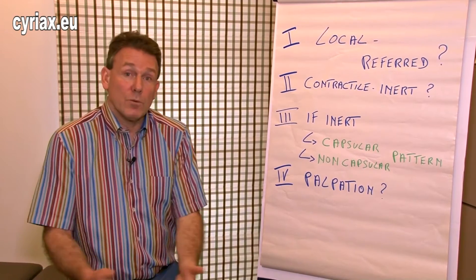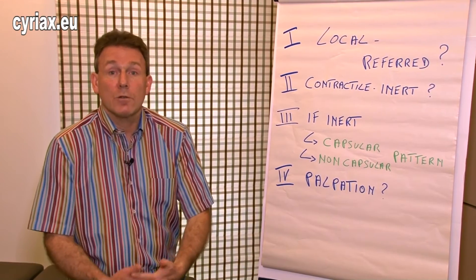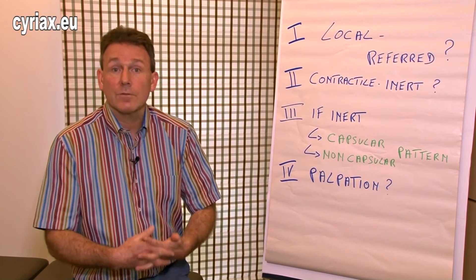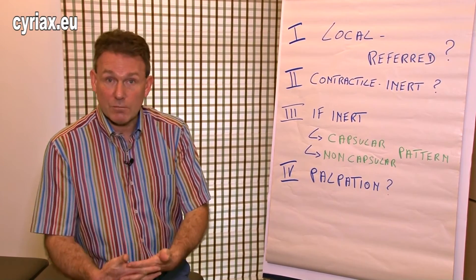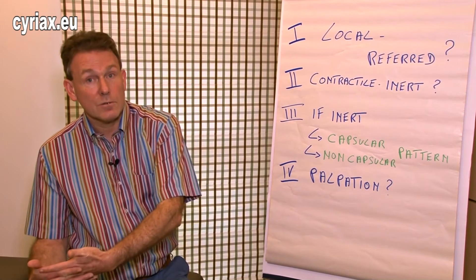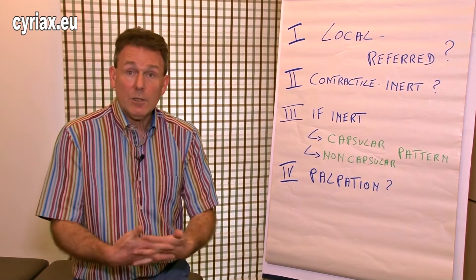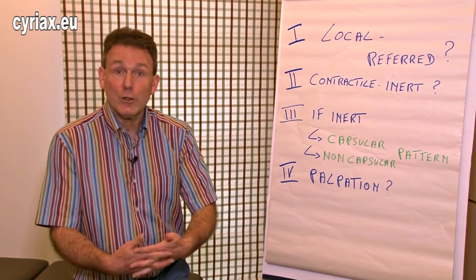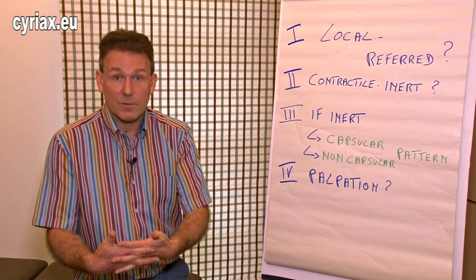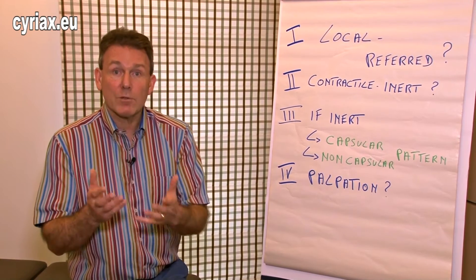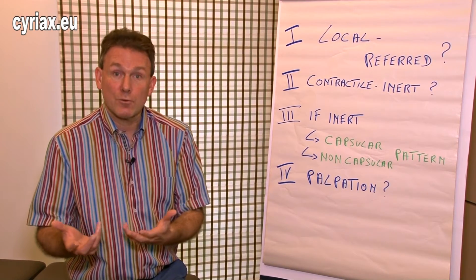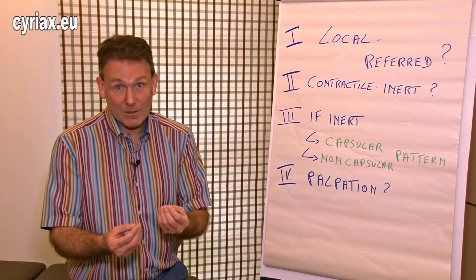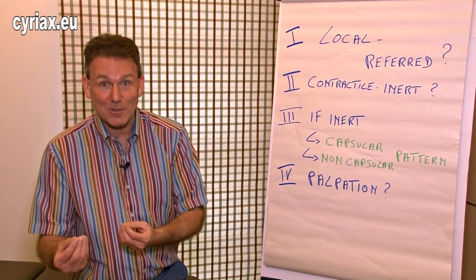What is a contractile lesion? We are talking about lesions of the muscle belly, the musculotendinous junction, the tendon, or the insertion. And what are the inert lesions? That's all the rest: disc, meniscus, bursa, ligament, nerves — all these kinds of structures. So I would like to make a differentiation between the two groups: does the patient have a contractile lesion and/or an inert lesion?